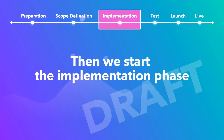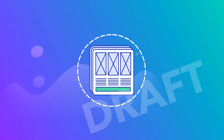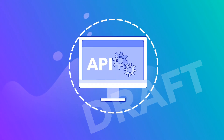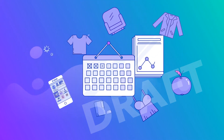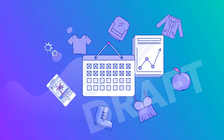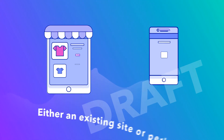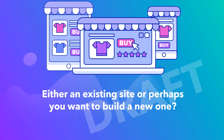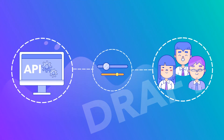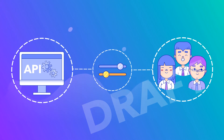Then we start the implementation phase. Here, we create the full product feed. We set up the web API and then host a workshop for you about how to use it. With the web API in place, you can start to integrate e-sales to your solution, either an existing site or perhaps you want to build a new one. During the implementation phase, you will fine-tune the web API and support your development team.